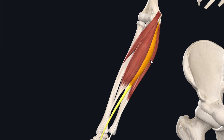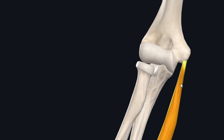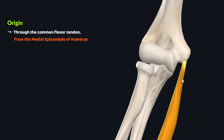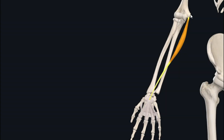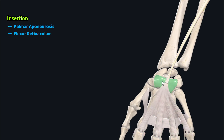The second muscle of this group is the palmaris longus, a thin fusiform muscle that lies just lateral to the flexor carpi ulnaris. The palmaris longus originates through the common flexor tendon from the medial epicondyle of the humerus. Its fibers travel inferiorly towards the hand and insert through a long tendon onto the palmar aponeurosis and the flexor retinaculum of the hand.